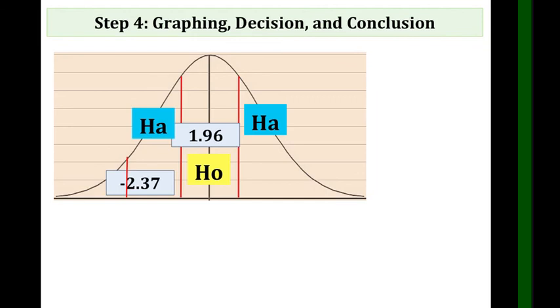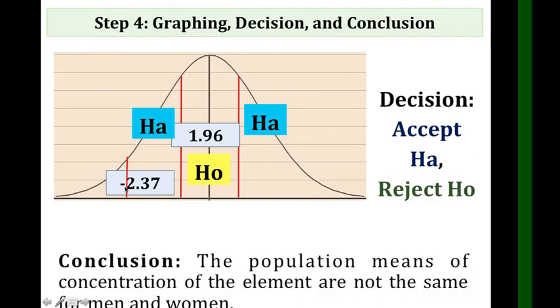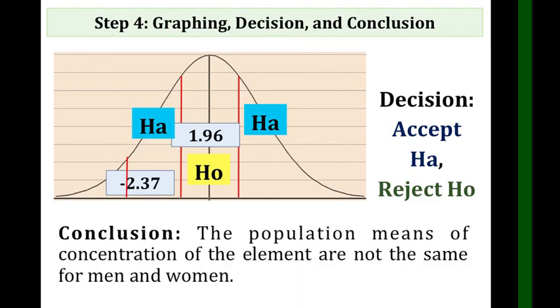We have negative 1.96 here and positive 1.96 here. So it went beyond the critical region. Therefore, accept HA and reject HO. The statement of HA is: the population means of concentration of the elements are not the same for men and women. That's our conclusion.